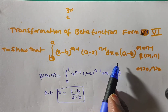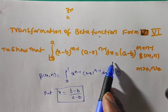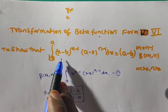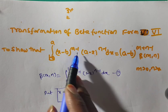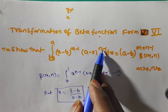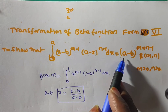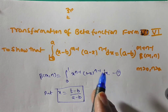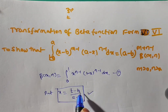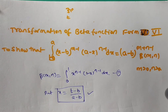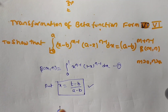Many times they ask this in the exam, and also for application. Sometimes they will give an integral like (x minus 2) to some power and (3 minus x) to some power times dx, and based on this form you need to evaluate. So you have to remember: to prove this, x is equal to (t minus b) by (a minus b).